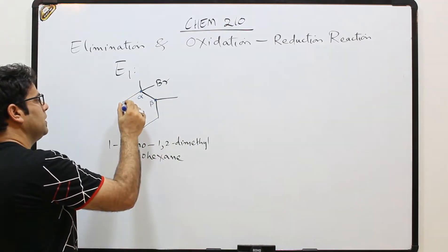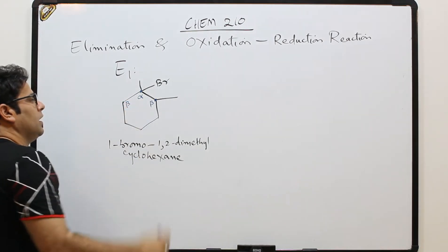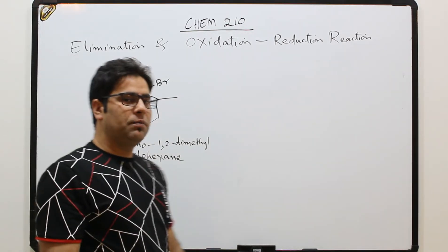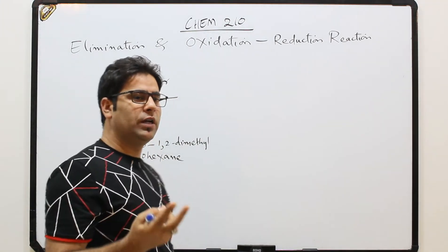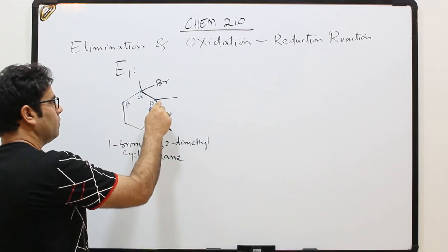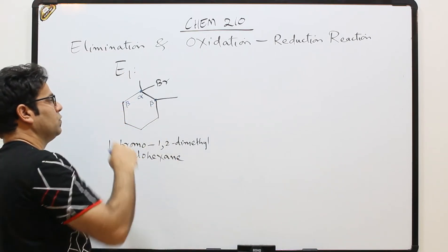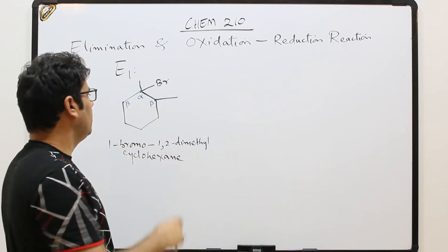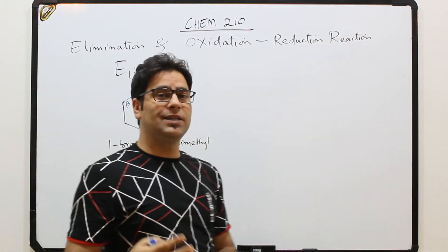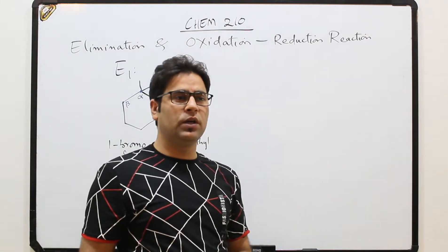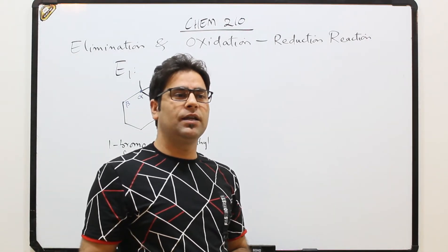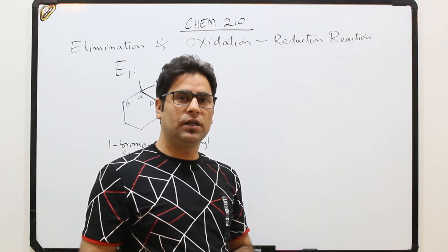There is the possibility of release of two beta hydrogens — either from one beta carbon or the other. So we have to use Zaitsev's rule: the highly substituted alkene will be the major product.